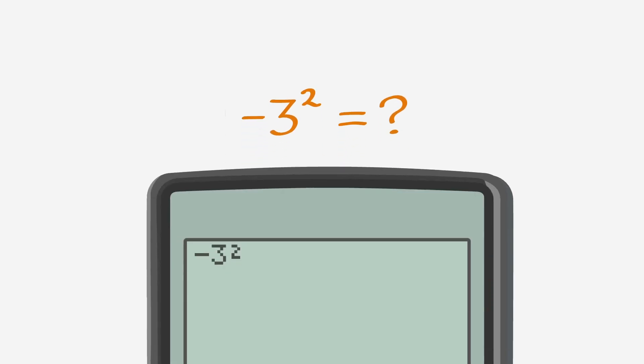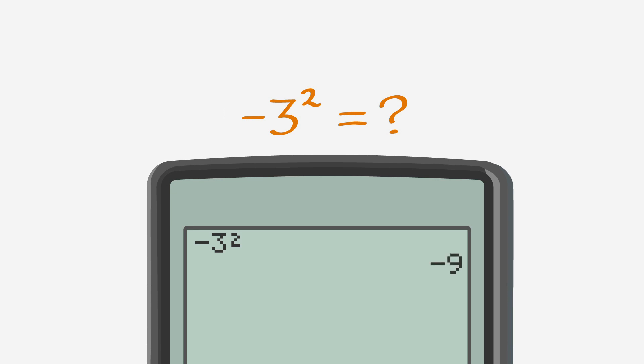When you plug this into our calculator, the answer is negative 9. But in this equation, parenthesis negative 3 squared, end parenthesis, equals what? Negative 3 is inside the parentheses right before the exponent, 2. So negative 3 is being squared. Making sure to use parentheses in the calculator, the answer is 9.